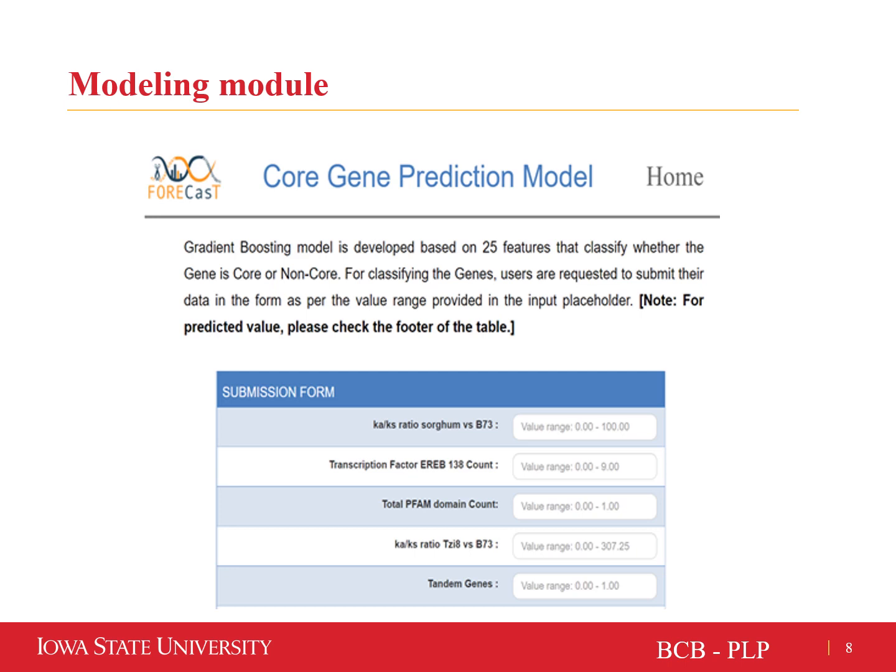The model section consists of machine learning models as a web service. As a use case, we provide two models: the advanced model trained on the entire subset of omics data, and the basic model trained on just the gene sequence and structural features. The aim was to classify Maize genes as core and non-core. Users can input specific gene model properties into an HTML form and click the submit button, which provides a prediction of whether the gene model is core or non-core at the bottom of the HTML page with a probability score.